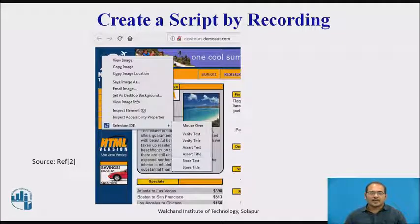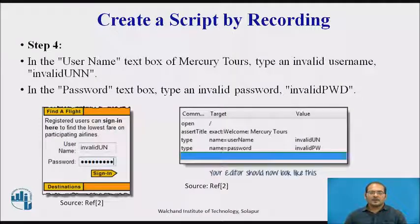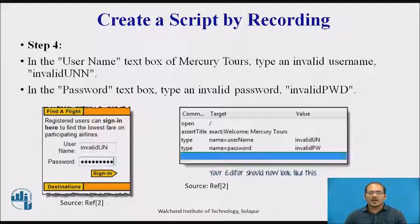Right-click on the page, then select Selenium IDE and the Assert Title option. Next, in the username text box of MercuryTour's, type an invalid username — that is 'invalid UNN'. In the password field, type an invalid password — that is 'invalid PWD'. You can see the type, username, and password, and the values that are provided. All these actions are recorded by Selenium IDE.